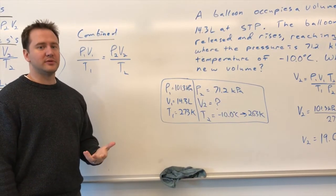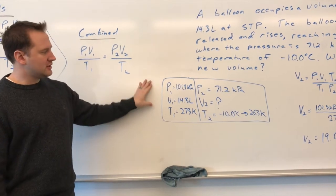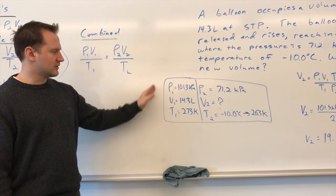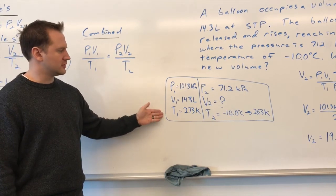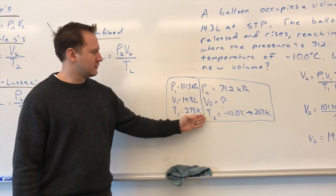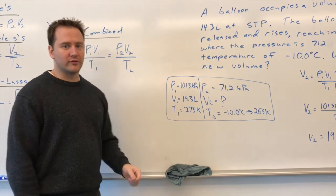We have all of the other pieces of information, and I recommend that you put them in a table like this where you list out the variables that are provided. So initial pressure, initial volume, initial temperature, final pressure, final temperature, and we're looking for the final volume.